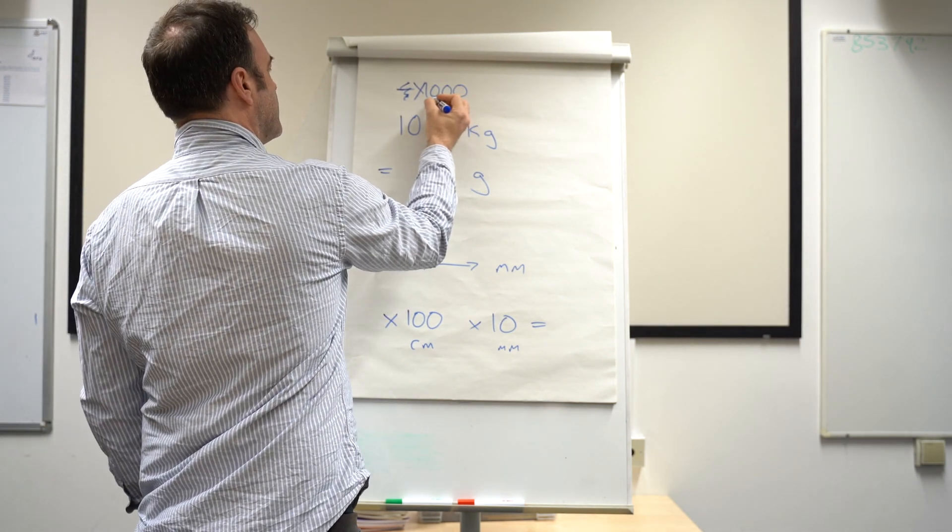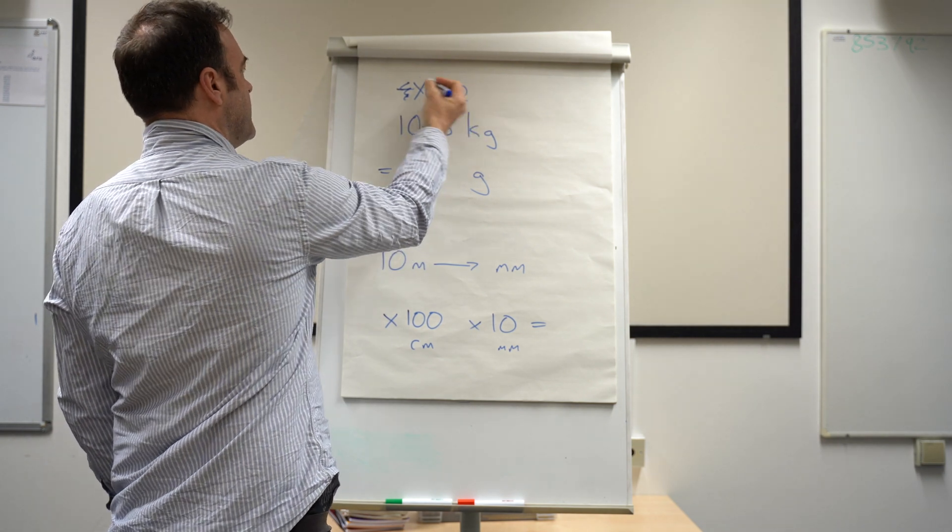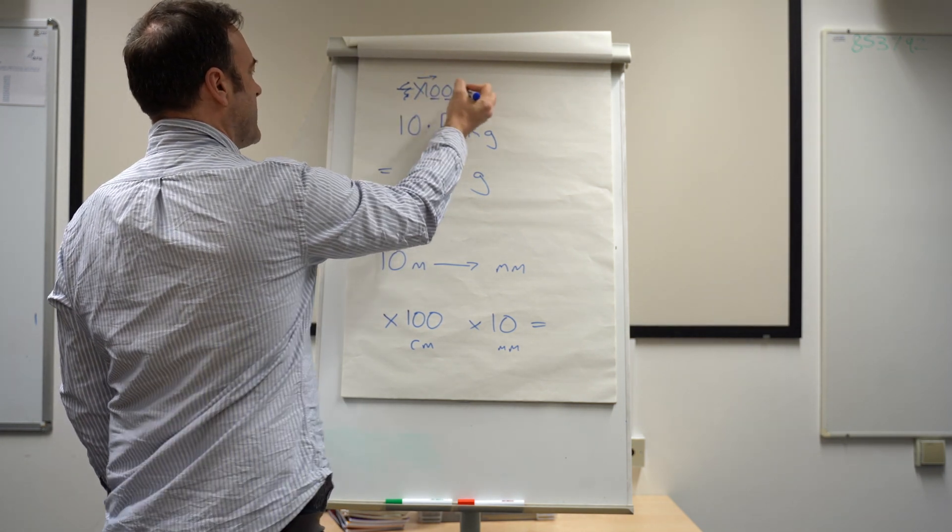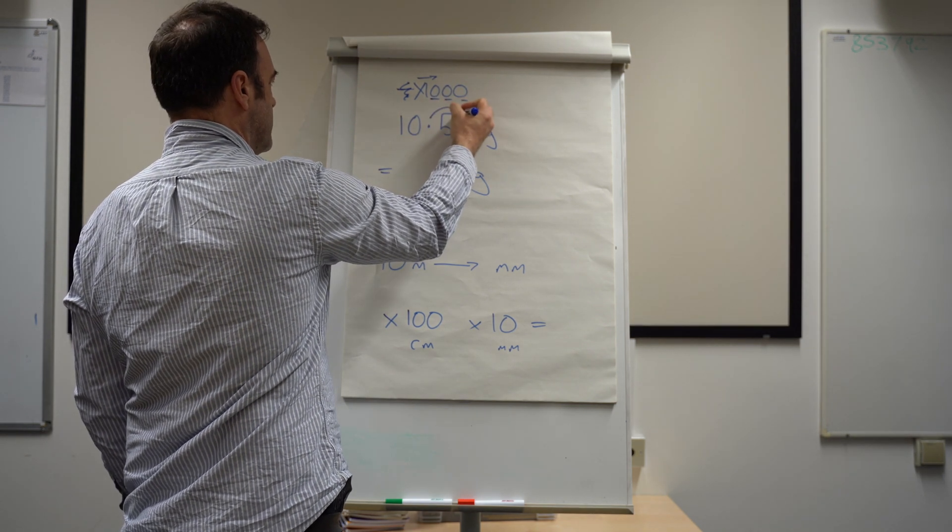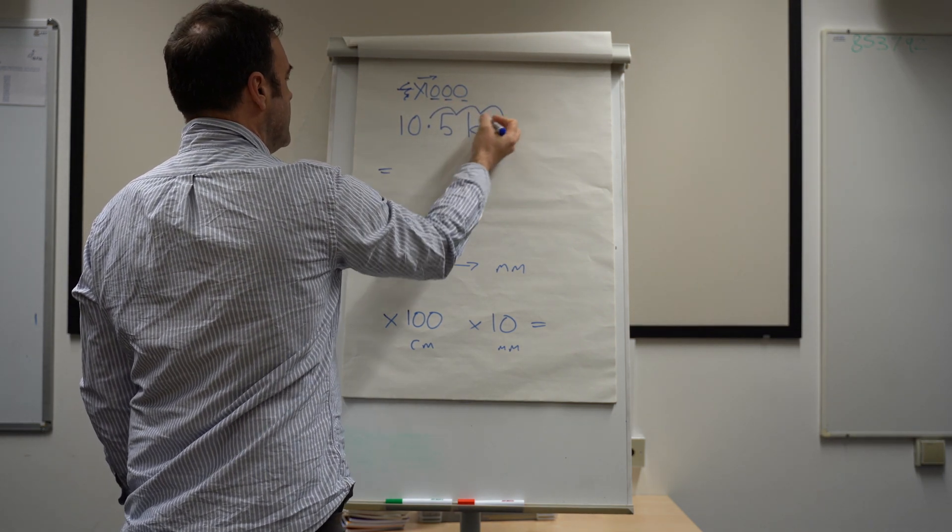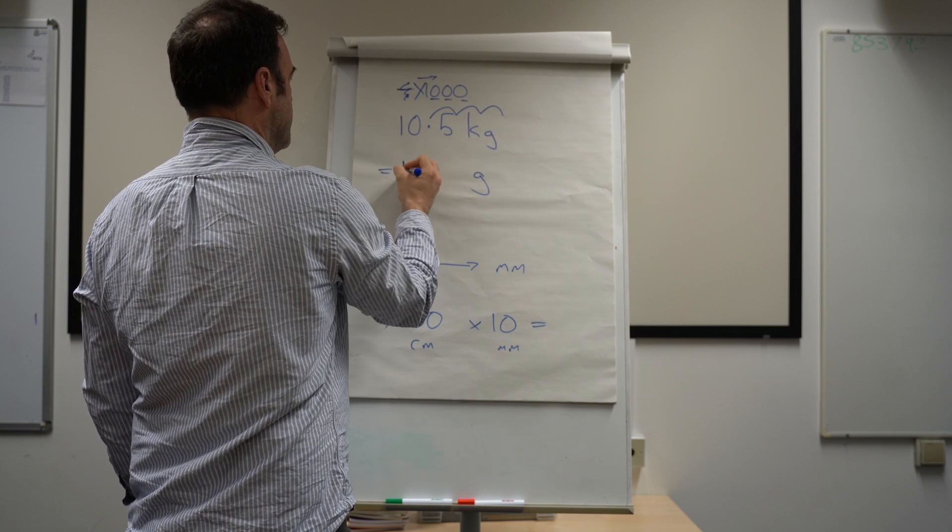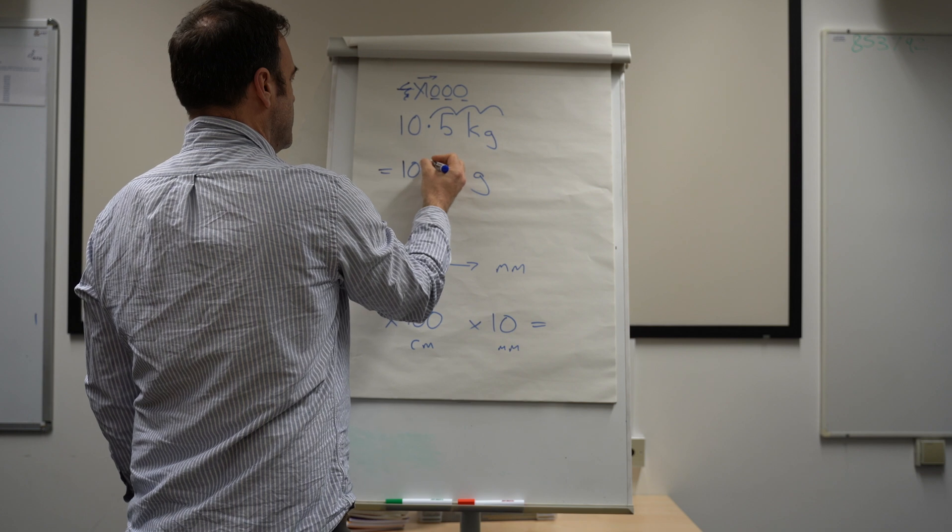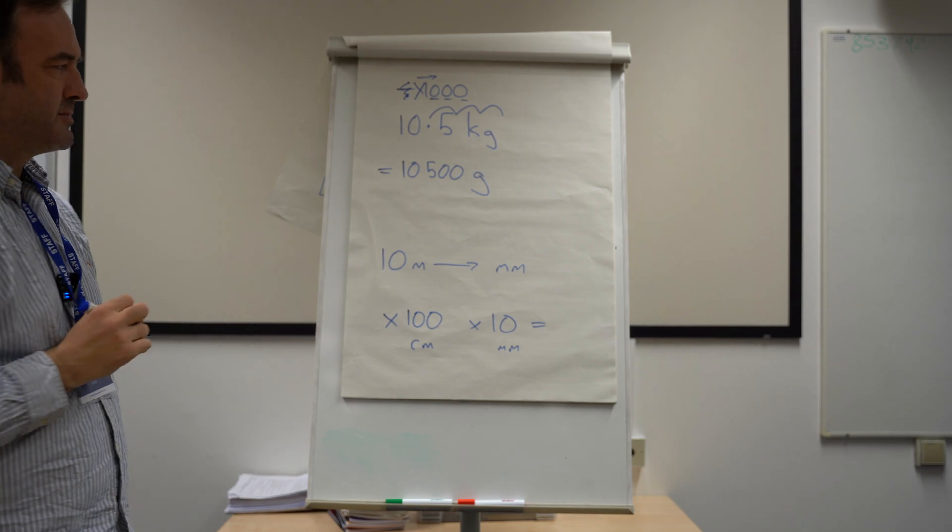Now when we multiply by 1000, we've got three zeros in a thousand. So we would get the decimal point, and because we're multiplying, we would go the way we read and write. We would do three jumps of the decimal. So 1, 2, 3. If we run out of numbers, we can just add zeros. So we'd end up with 10,500 grams.